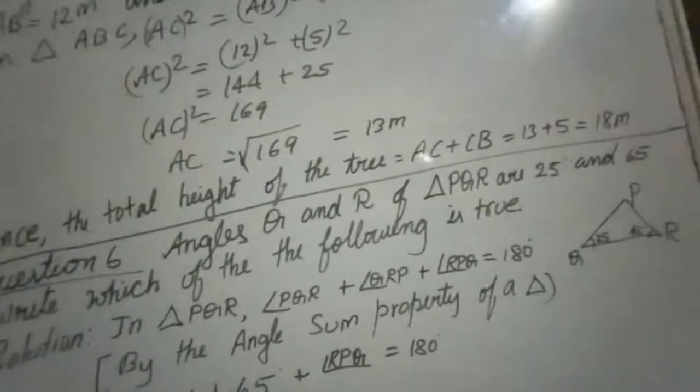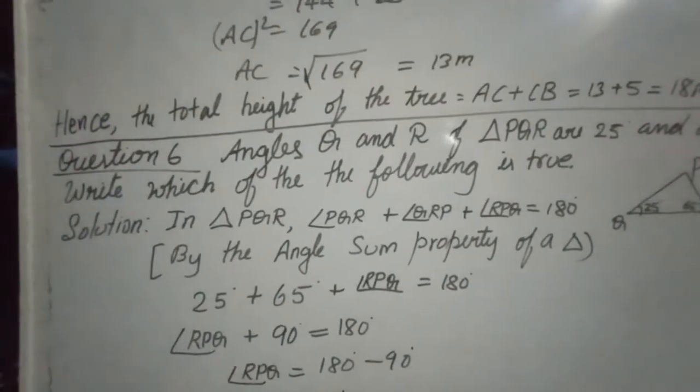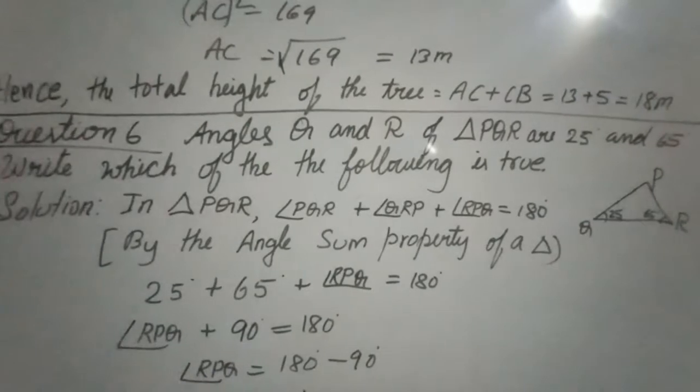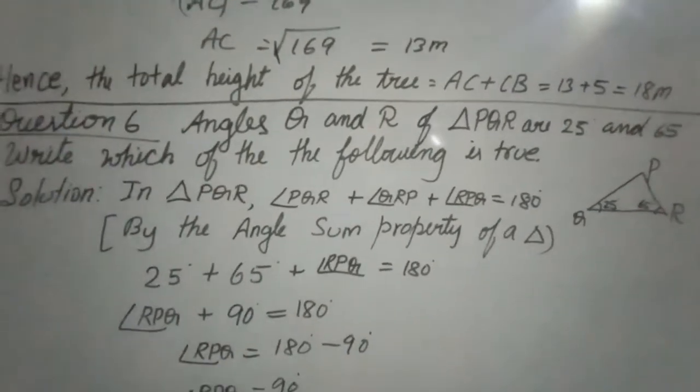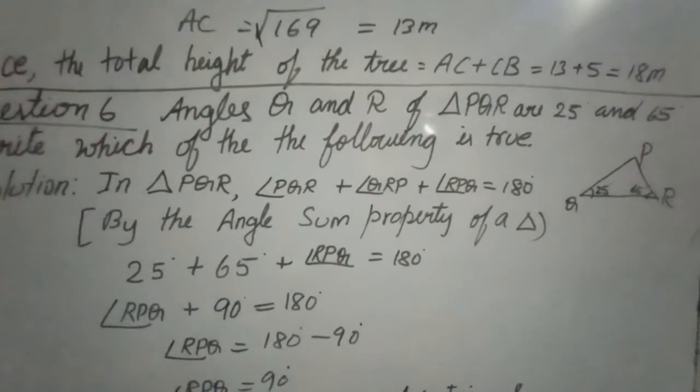Angle P is equal to 180 minus 90. Angle P is equal to 90 degree.